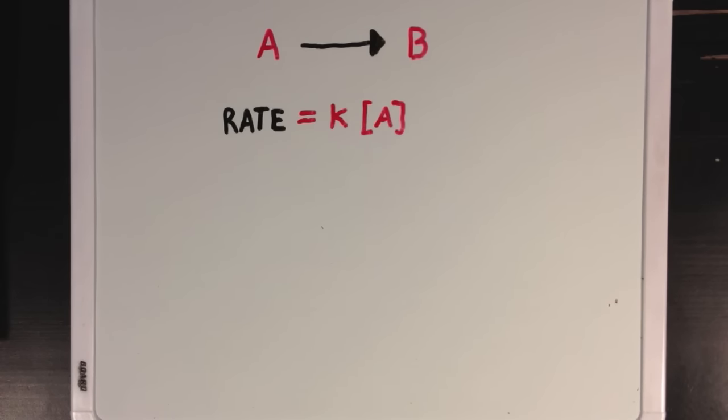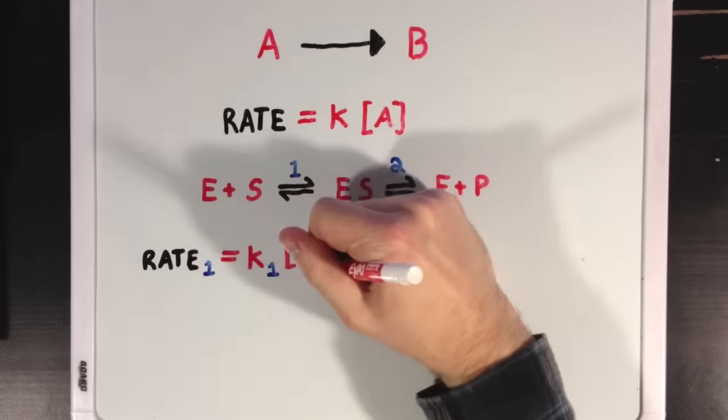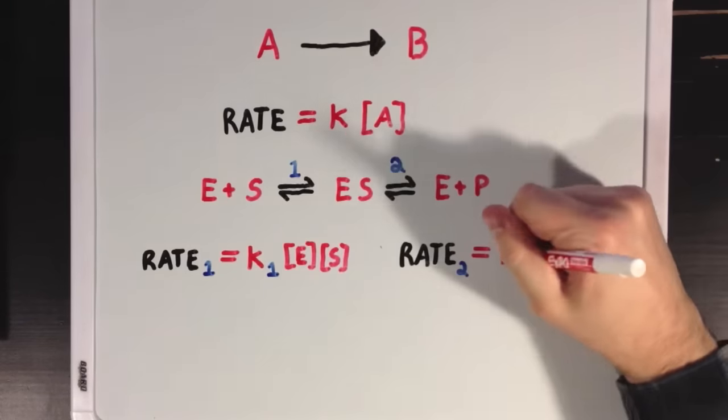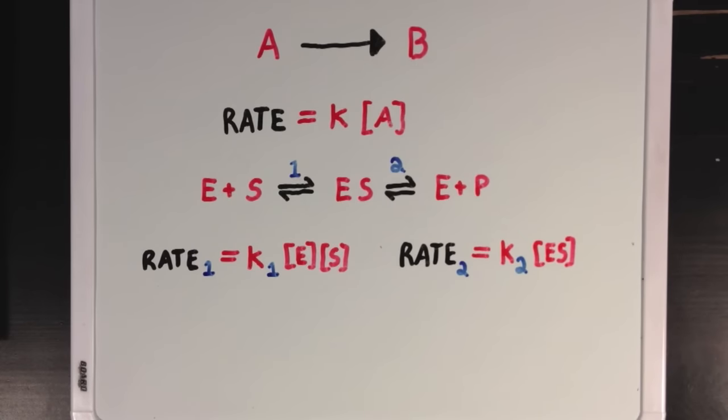So for our sequence that I mentioned before, E plus S going to ES going to E plus P, we'd have two reactions going on, 1 and 2, which would each have their own rate equation. Rate 1 would be equal to rate constant K1 times the two starting material concentrations, which are E and S, while rate 2 would be equal to K2 times the concentration of one starting material, ES.